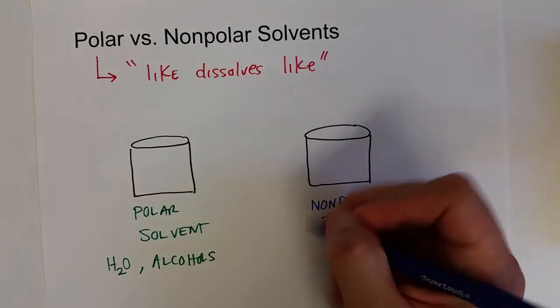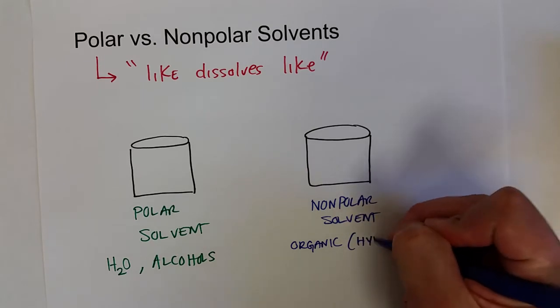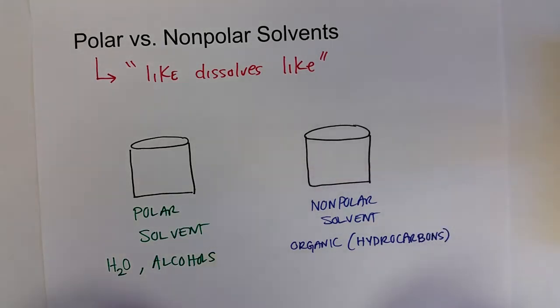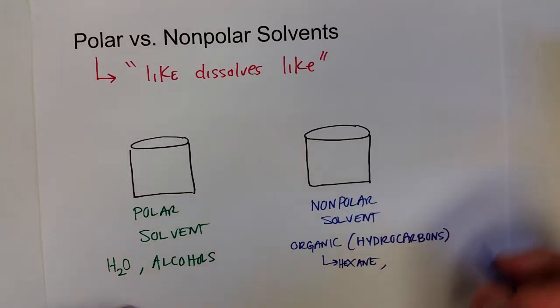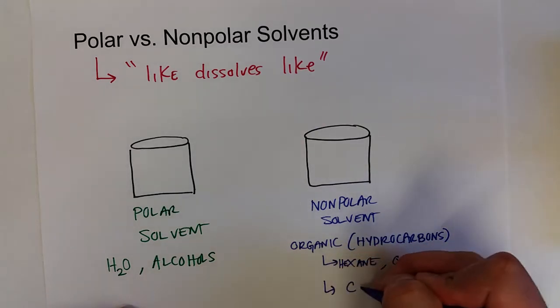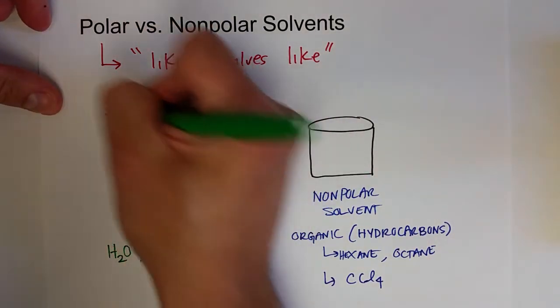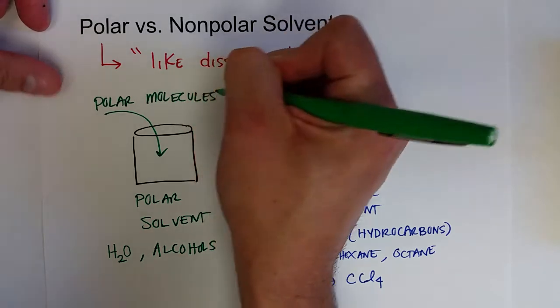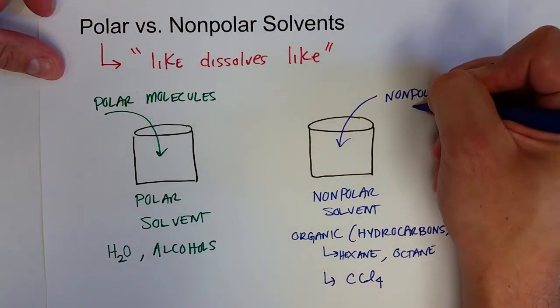And if you have a nonpolar solvent, you would be able to dissolve nonpolar solutes. Nonpolar solvents are organic solvents, primarily hydrocarbons, which we'll talk about in future chapters. Like hexane, heptane, octane. And some other solvents like carbon tetrachloride, CCl4 is another solvent that can be used. And what can dissolve in polar solvents? It's polar molecules. And we can dissolve nonpolar molecules in nonpolar solvents.